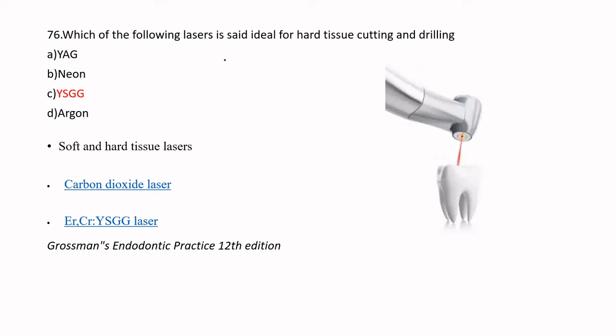The ideal laser for hard tissue cutting and drilling is the Er:YAG or Yttrium-Scandium-Gallium-Garnet (YSGG) laser. Both YSGG and carbon dioxide lasers are soft and hard tissue lasers. Among the given options, YSGG is the appropriate answer for hard tissue cutting and drilling.